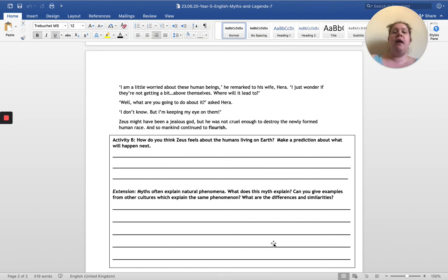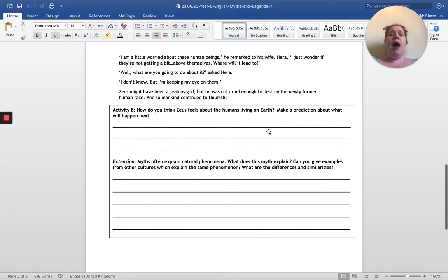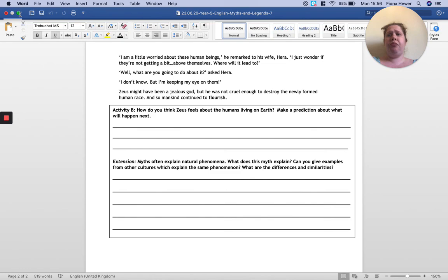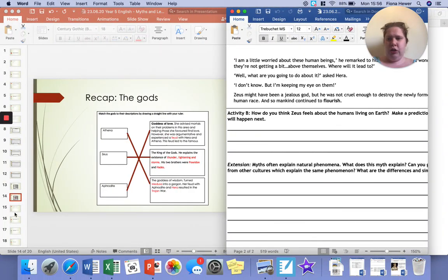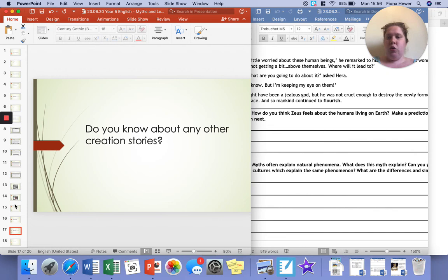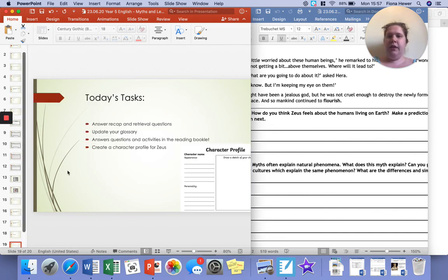Zeus might have been a jealous god, but he was not cruel enough to destroy the newly formed human race. And so mankind continued to flourish. You've got two tasks here. Task one is how do you think Zeus feels about humans living on earth and make a prediction about what happens next. Then myths often explain natural phenomena. What does this myth explain? Can you give examples from other cultures which explain the creation story as well? What are the differences and similarities? I'd expect a couple of sentences for B and at least a paragraph for the extension question.